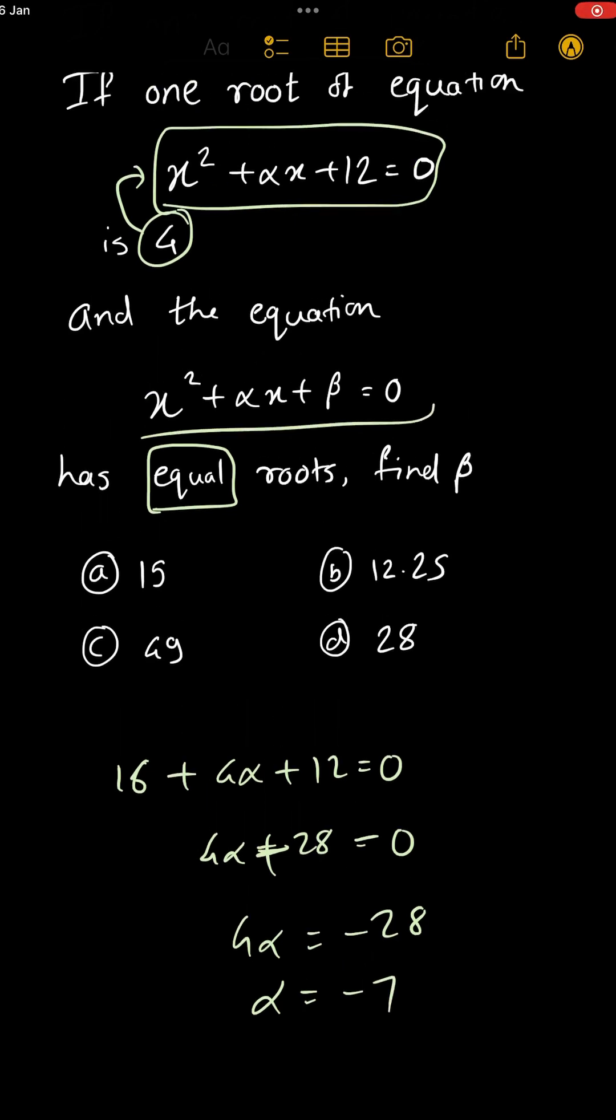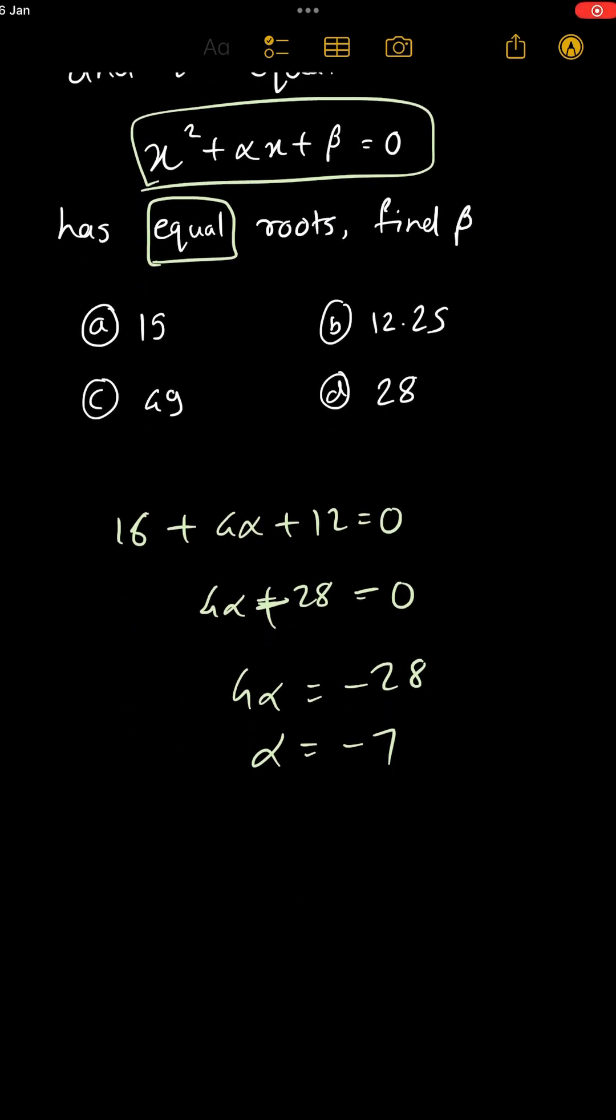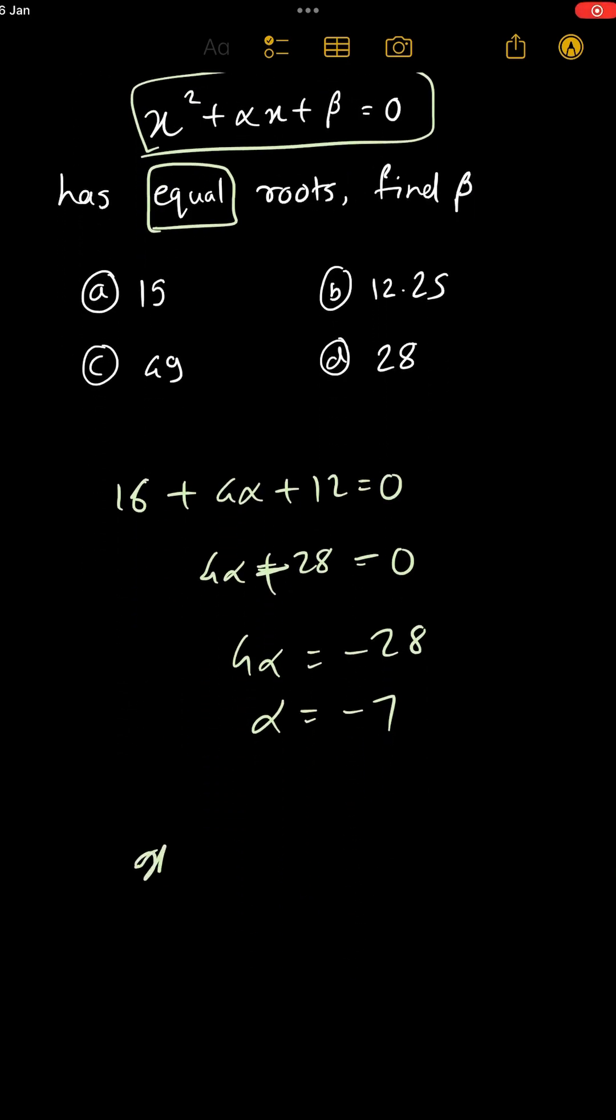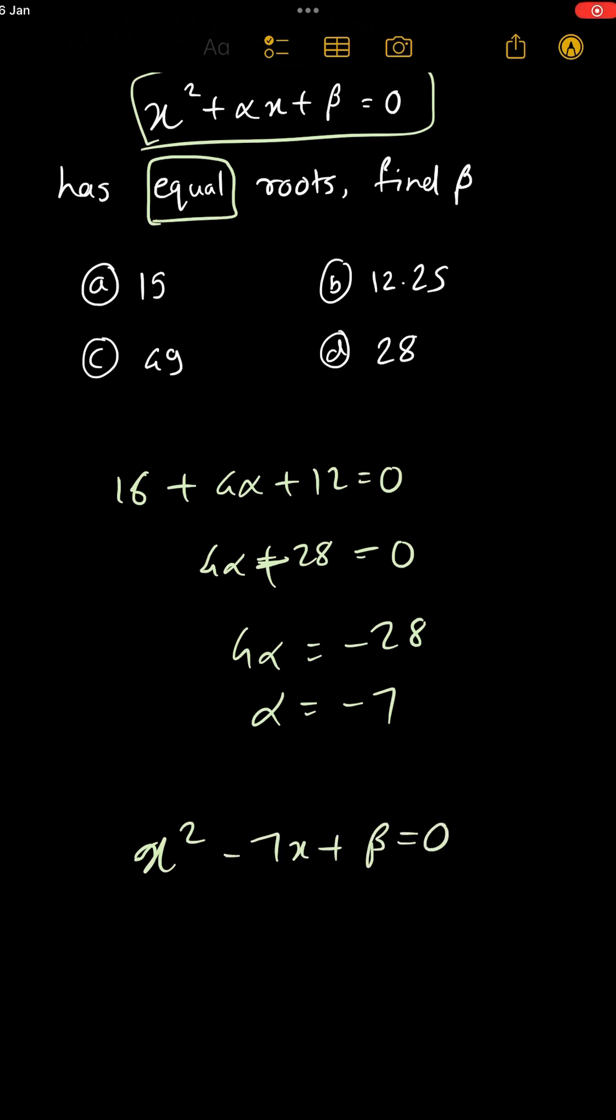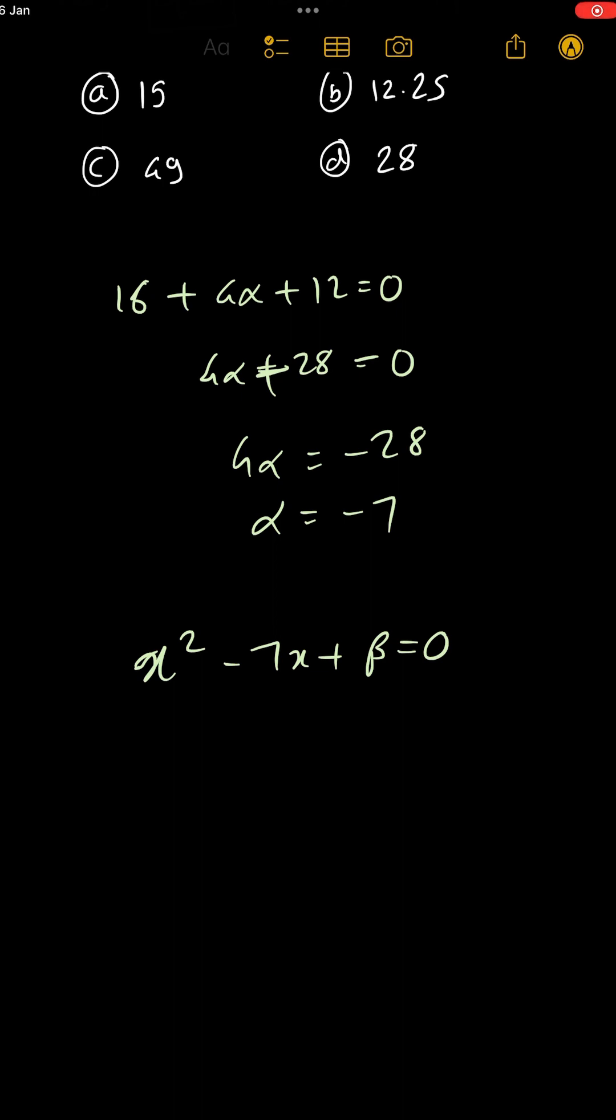Now this equation has equal roots. What is this equation? x² + αx + β, which means x² - 7x + β = 0, has equal roots. When roots are equal, the discriminant, b² - 4ac, equals 0.